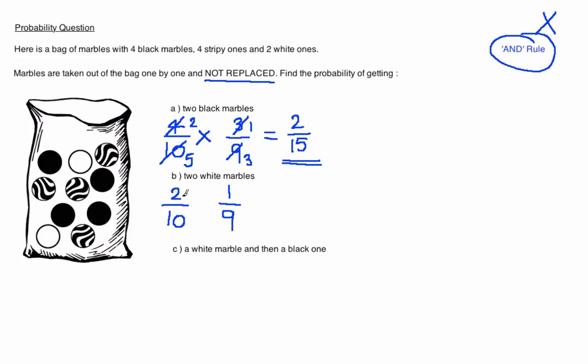Once again these two fractions are multiplied together. Here we can cancel down the first fraction by dividing by 2 to give us 1 fifth and then multiply across. So the final answer is 1 out of 45.